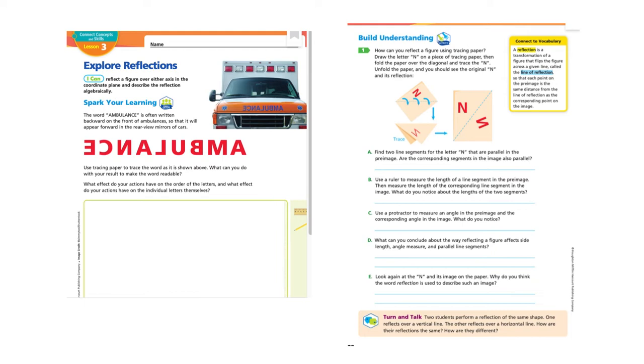Let's look at BUILD Understanding. They have a yellow box with some highlighting, which tells you there's some important words or phrases. A reflection is a transformation of a figure that flips the figure across a given line called the line of reflection, so that each point on the pre-image is the same distance from the line of reflection as the corresponding point on the image.